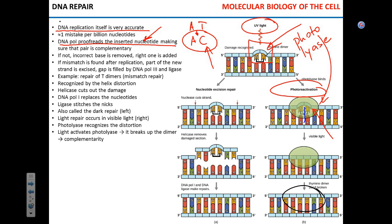What if there is no light and photo reactivation is impossible? In this case we have nucleotide excision repair. First, the enzyme nuclease introduces cuts into the damaged strand, breaking phosphate bonds between two adjacent nucleotides. Then helicase binds to the section that is separated from the rest of the DNA and unwinds it, resulting in the removal of the entire section from the double strand. The gap is then filled by DNA polymerase I.